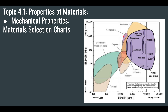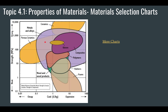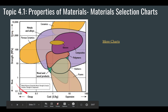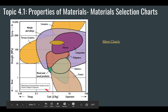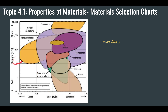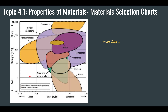Here's another example of a material selection chart — this one shows strength versus cost. In this case you might be looking for something that is strong but low cost, and you'd be looking in this area of the chart.